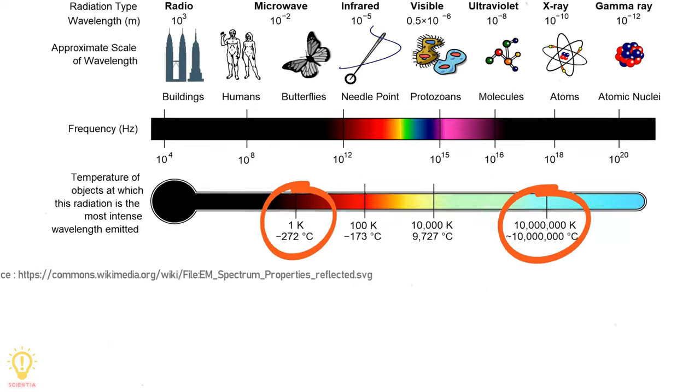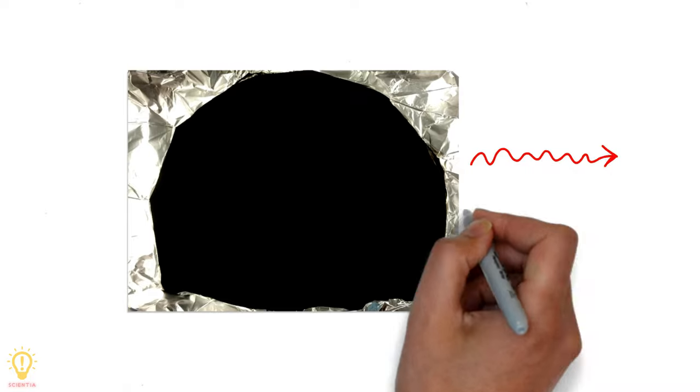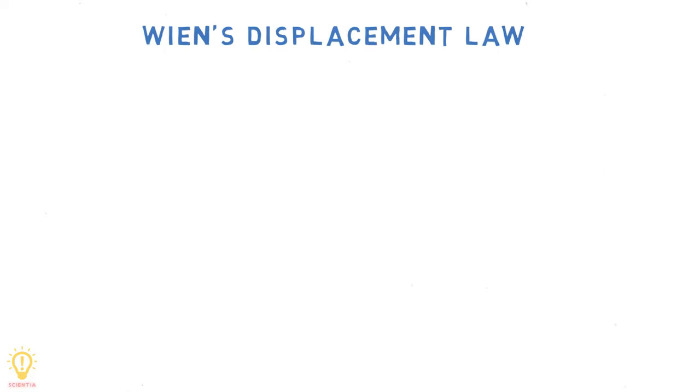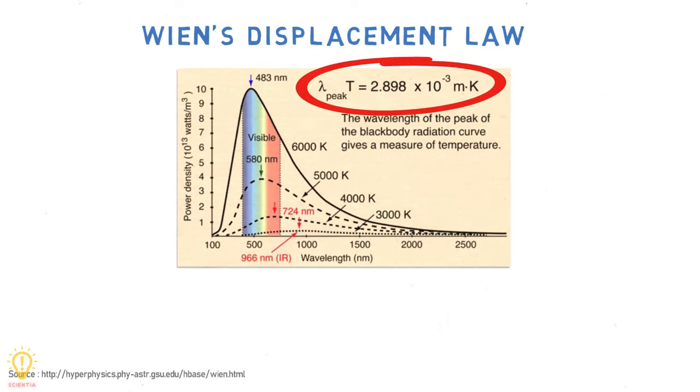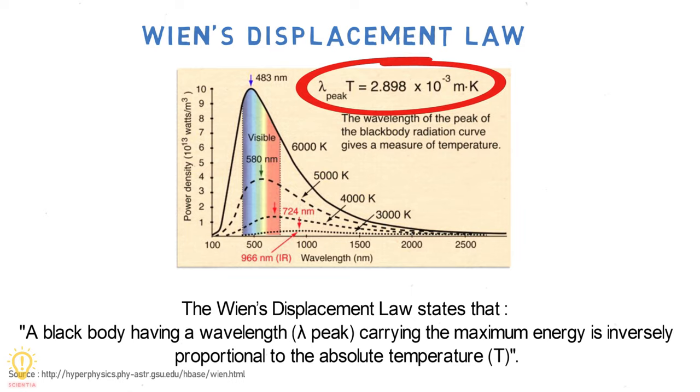A black body is an idealized object that absorbs all electromagnetic radiation it comes in contact with, then emits thermal radiation in a continuous spectrum according to its temperature. Black body radiation describes the relationship between an object's temperature and the wavelength of electromagnetic radiation it emits.